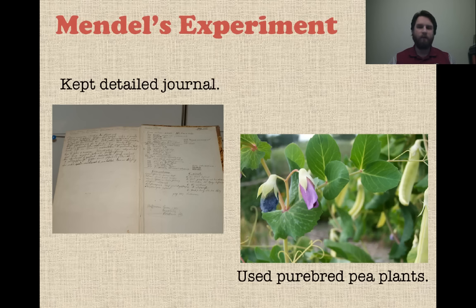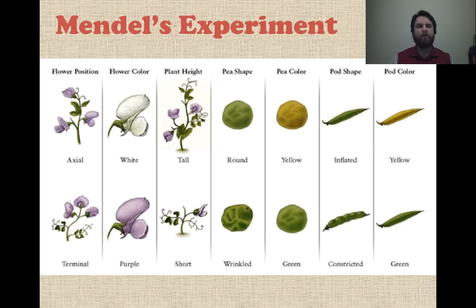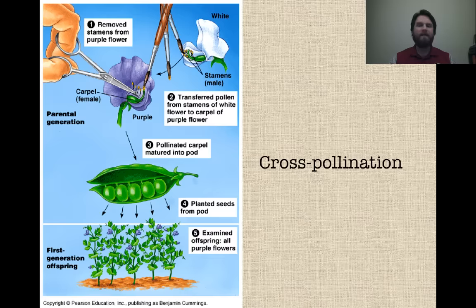Speaking of those experiments, let's talk about what he did. He kept a very detailed journal of the different experiments he did with these pea plants. He also used purebred pea plants, which is very important because it makes things a lot more predictable. The traits he looked at were either present or not present — flower color was either white or purple, pea shape was either round or wrinkled, or green or yellow. That made it quite a bit easier to record accurate results.